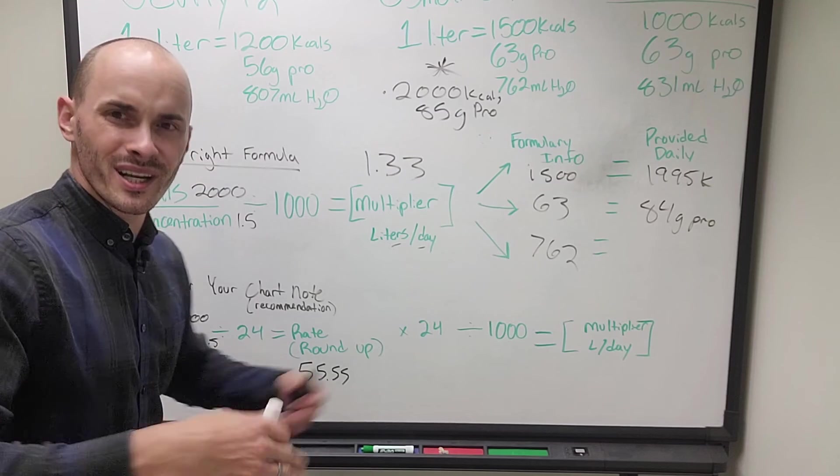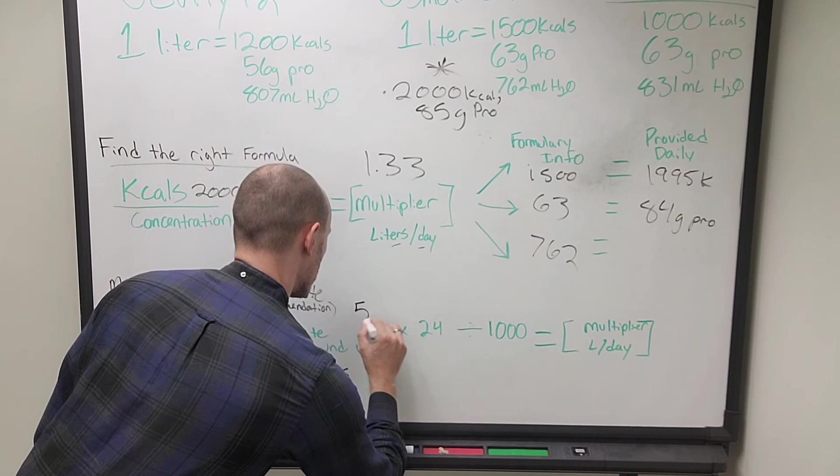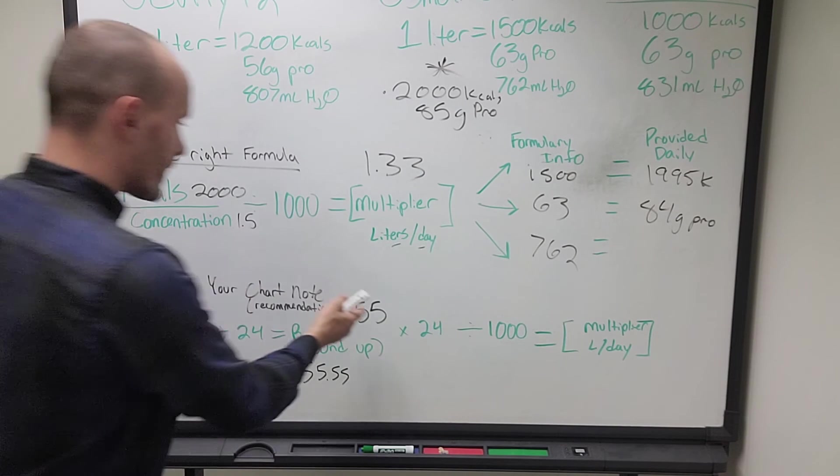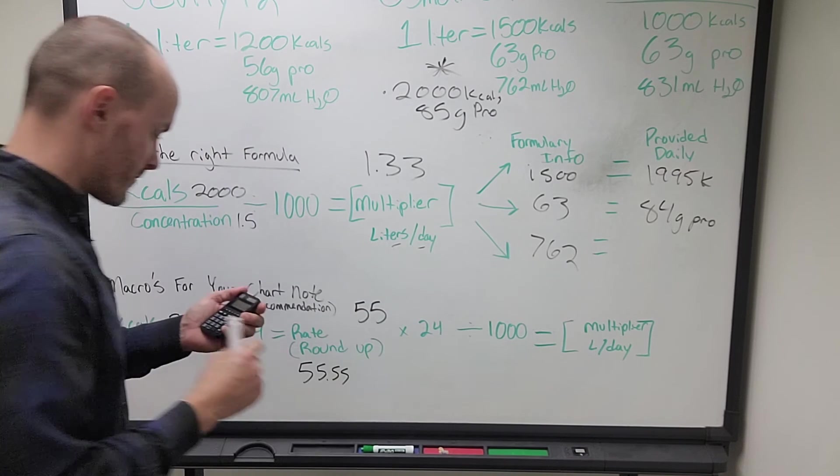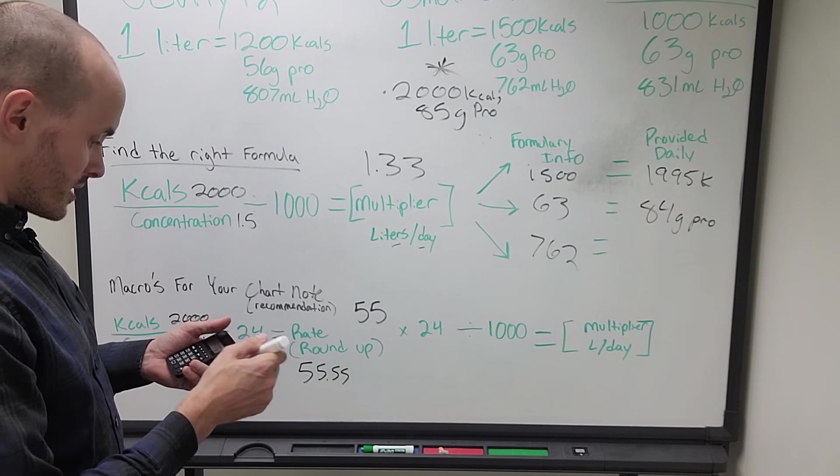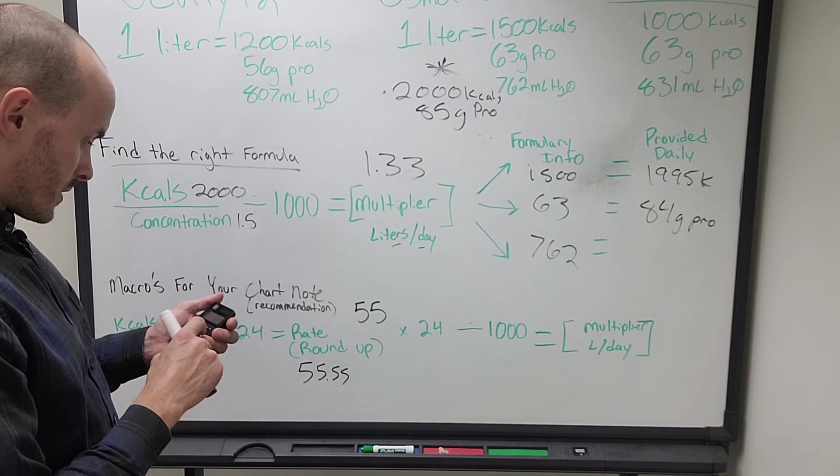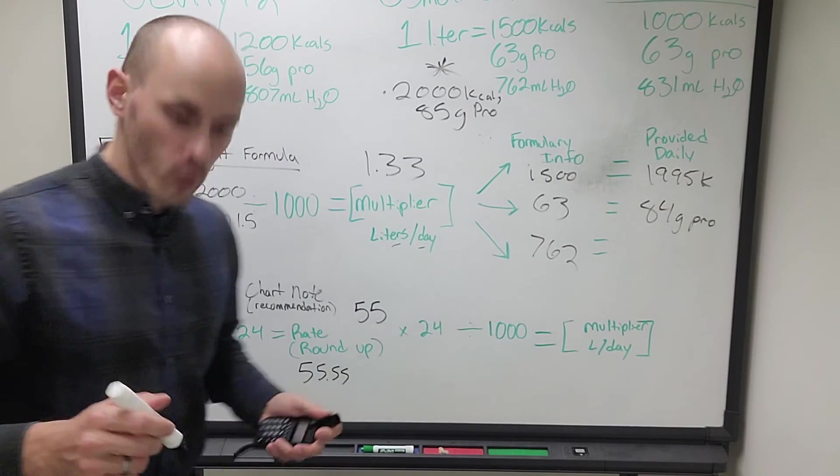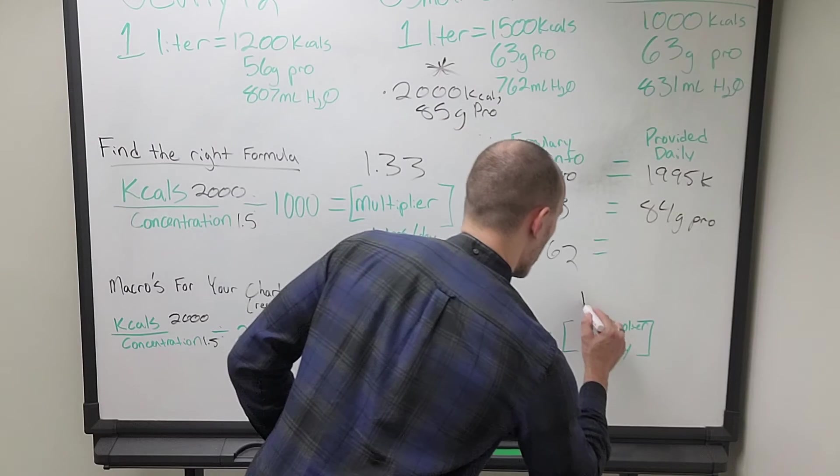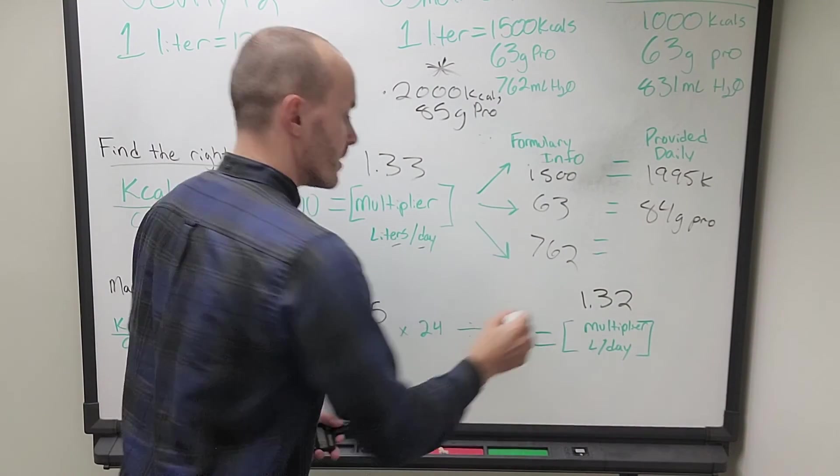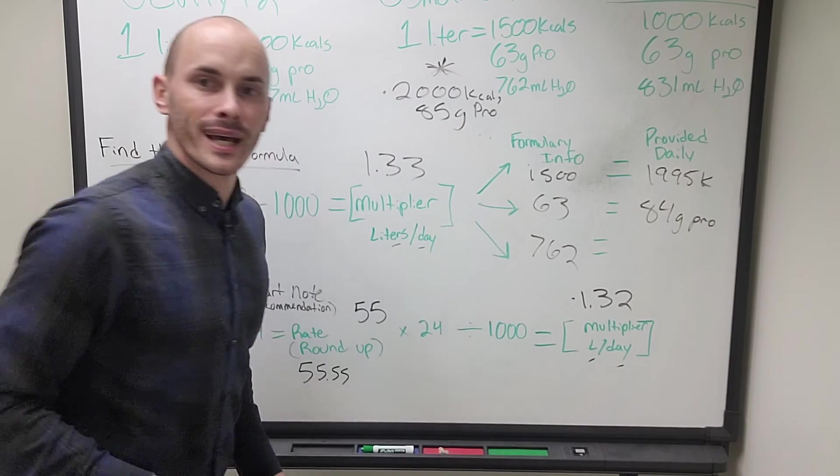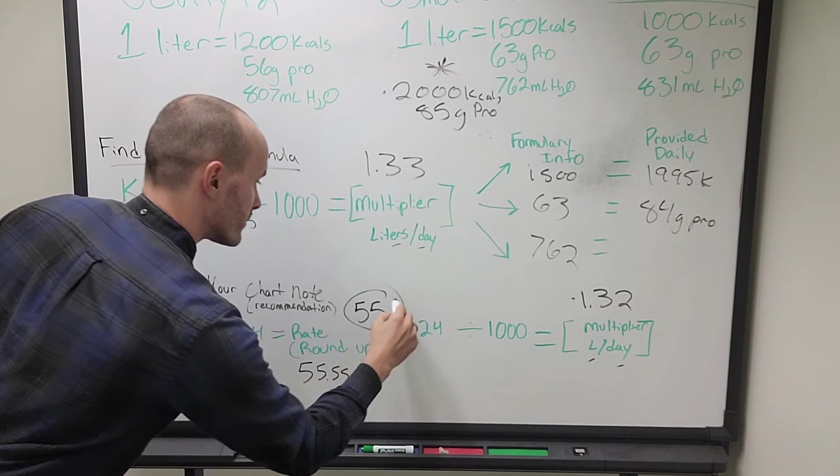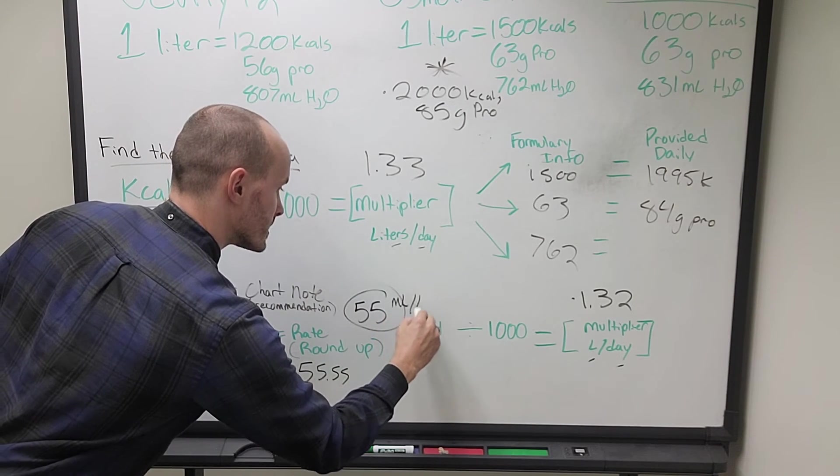We need a nice clean number. So let's use 55 per hour times 24. So 55 mils per hour times 24 hours in a day gives us 1320 divided by 1,000 gives us our new multiplier. 1.32. 1.32.